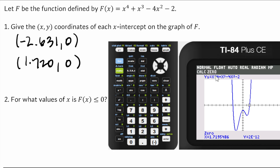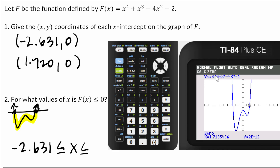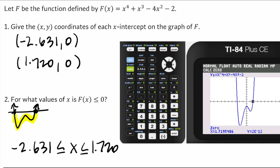For what values of x is f of x less than or equal to 0? Looking at the graph, we're looking for the region where the curve is below the x-axis, which is equal to 0 at the intercepts we just found. So that's when x is between negative 2.631 and 1.720, with less than or equal signs.